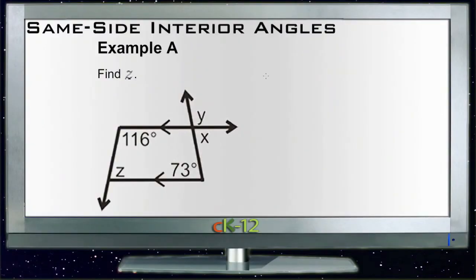All right, here's the examples for same-side interior angles. Remember that same-side interior angles add up to be 180 degrees, so that's the information we're going to be working with here to solve the next set of questions.